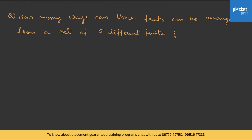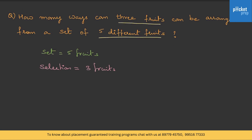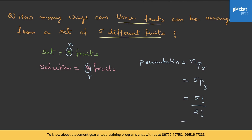Here is another question. How many ways can 3 fruits be arranged from a set of 5 different fruits? The set has 5 fruits and the selection is 3 fruits, which have to be arranged. We know for this case permutation is nPr. Here n = 5 and r = 3, so 5P3 = 5! / (5 − 3)! = 5! / 2! = 5 × 4 × 3.